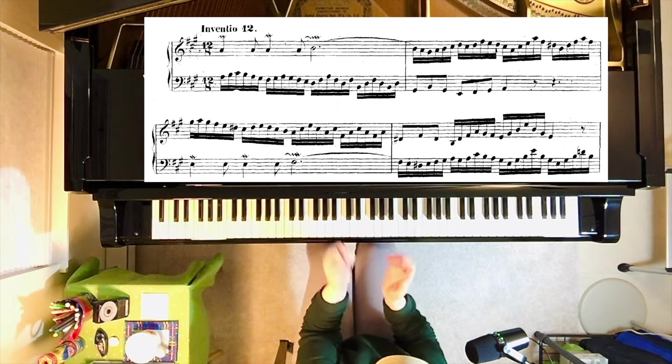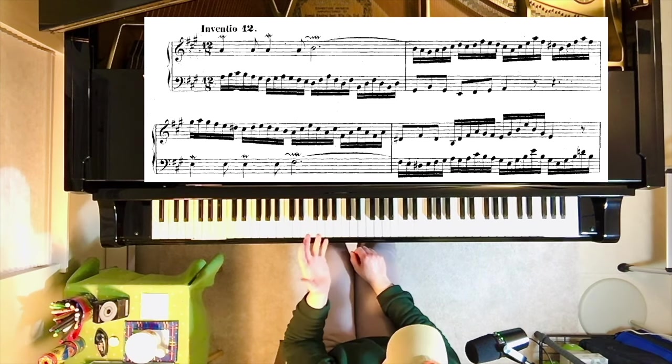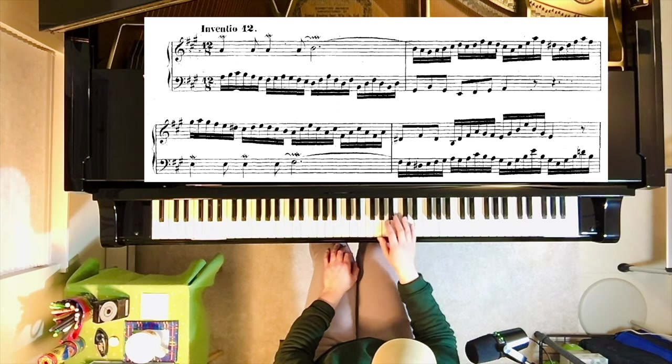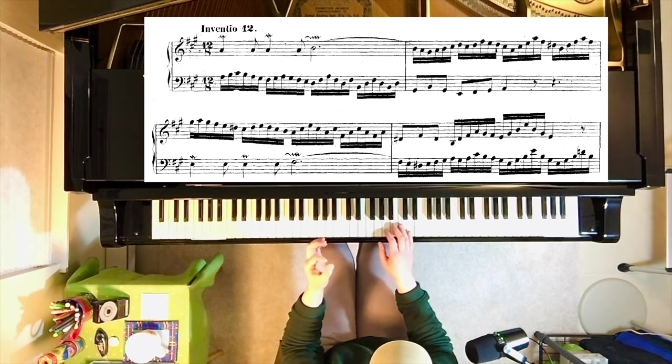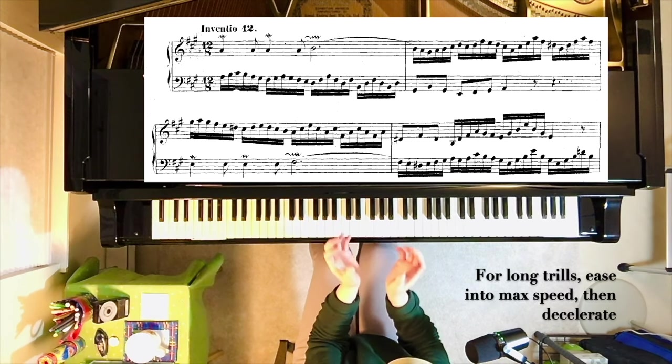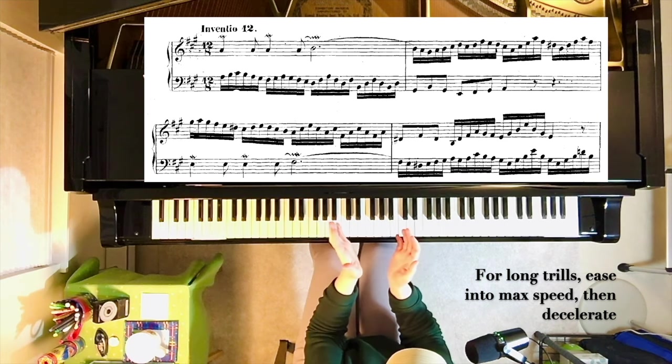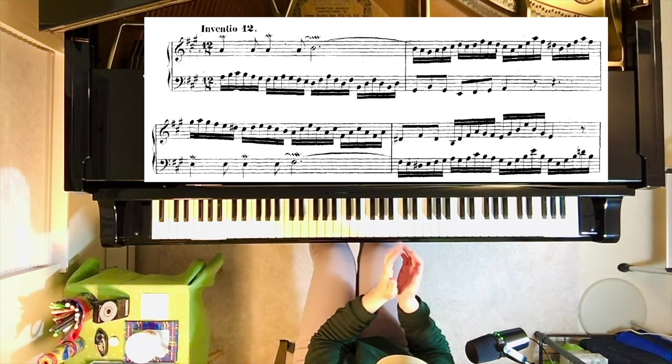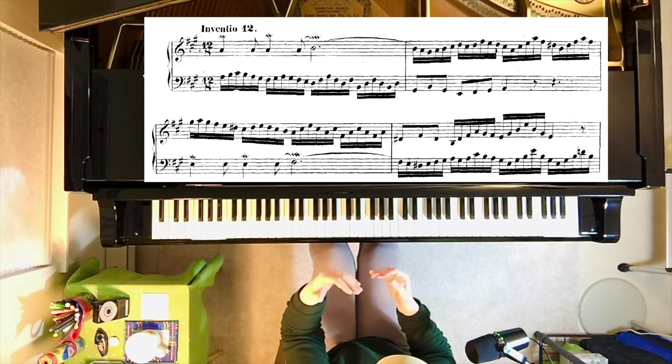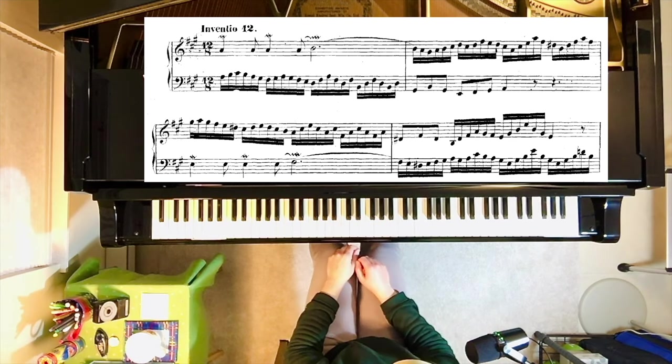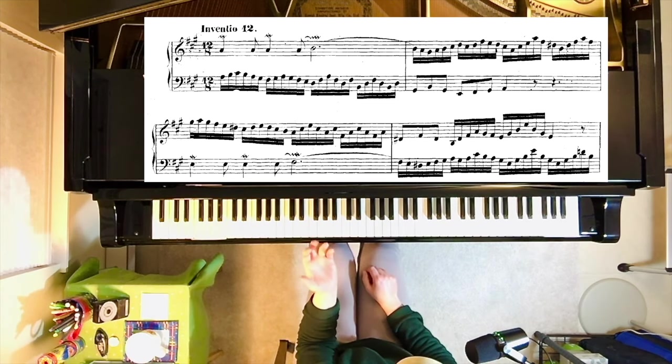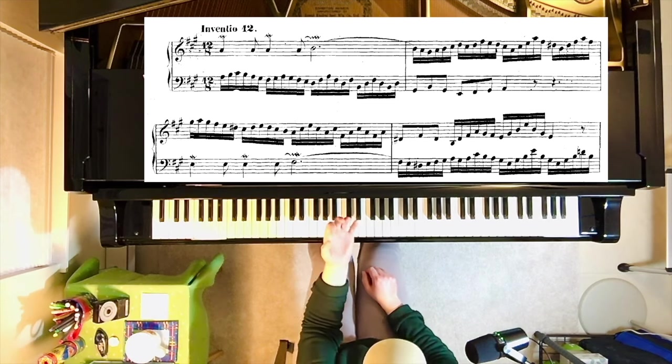Because that is a very challenging aspect to this invention number 12, and a number of other pieces as well, the invention number four. These long trills, I'm imagining a gradual acceleration of speed up to the working speed of the trill, and then a slight deceleration. Because it's like when you're driving your car, you don't immediately go from park to full speed. There's an acceleration, and then you brake and you slow down. Same thing with a trill. This is a fast piece, so it will be a fast trill. But I want to ease into it.